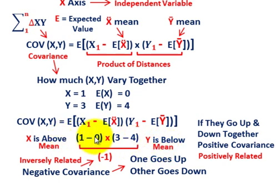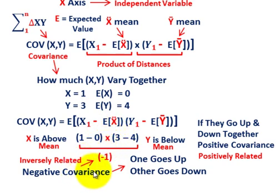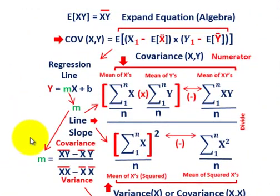X is above its mean and y is below its mean — that's what covariance is showing here. You just go through all those different points and sum them up, comparing each x coordinate's difference from its mean times each y coordinate's difference from its mean. When talking about negative covariance, this is where one variable is going up while the other is going down — a negative or inversely related covariance. If they go up and down together, then you have a positive covariance, or they'd be positively related.